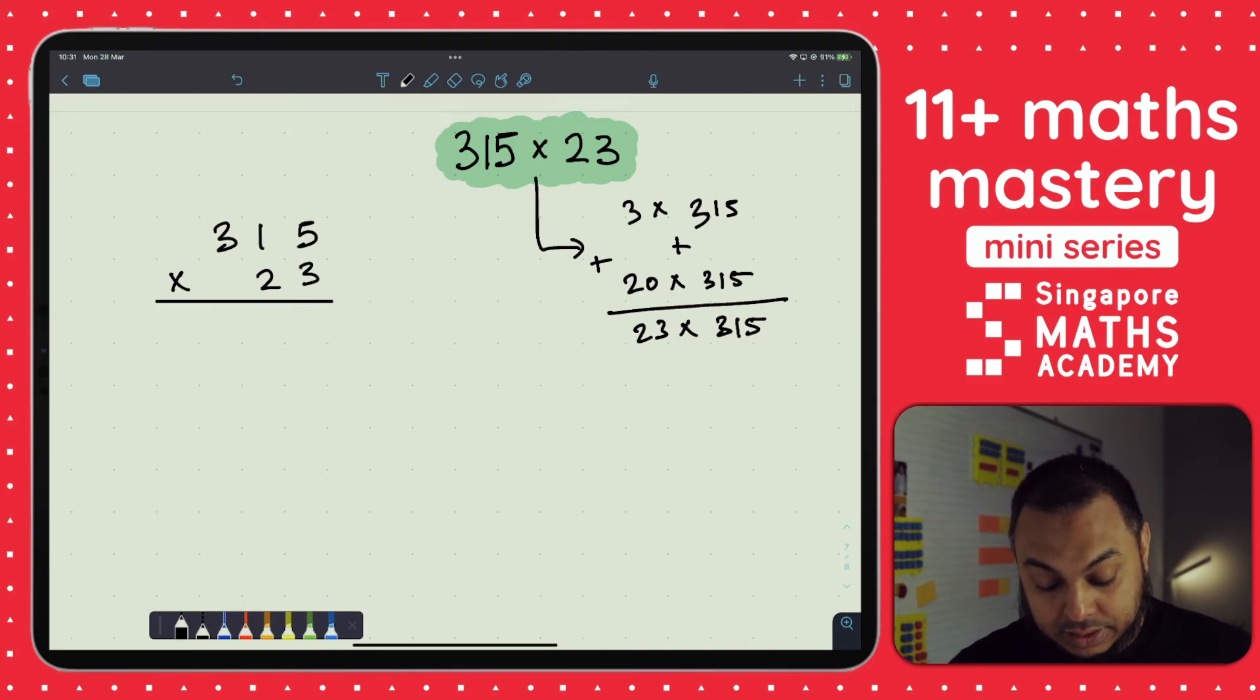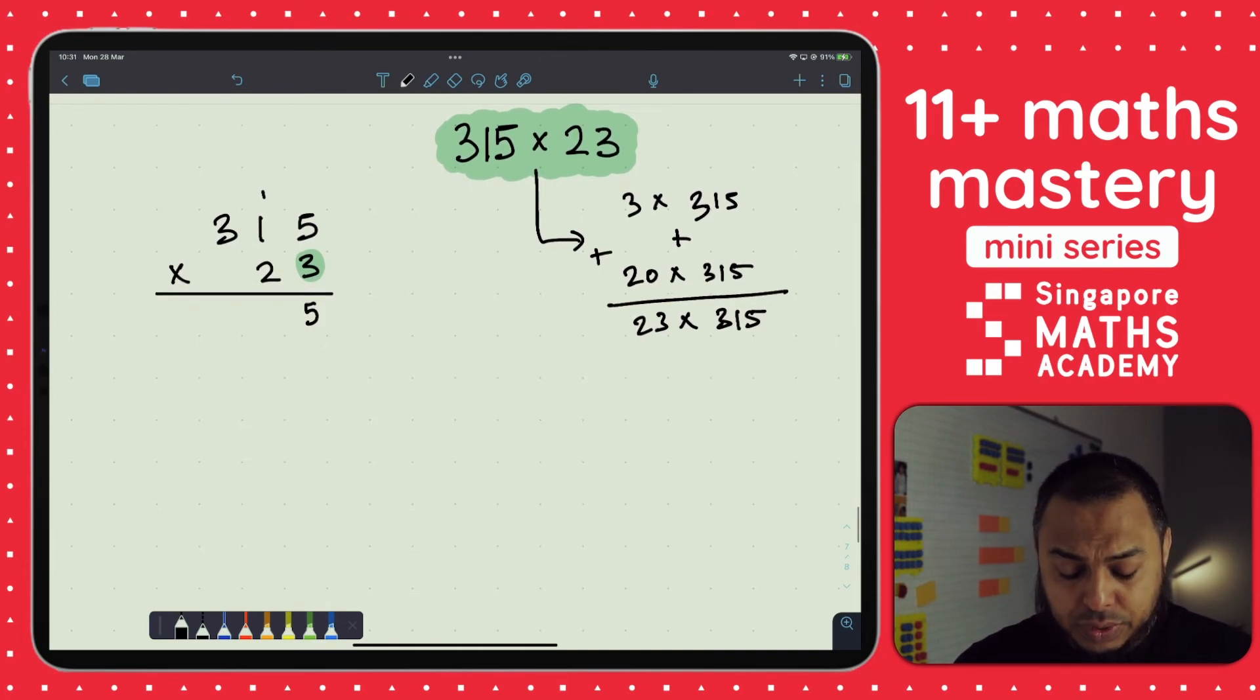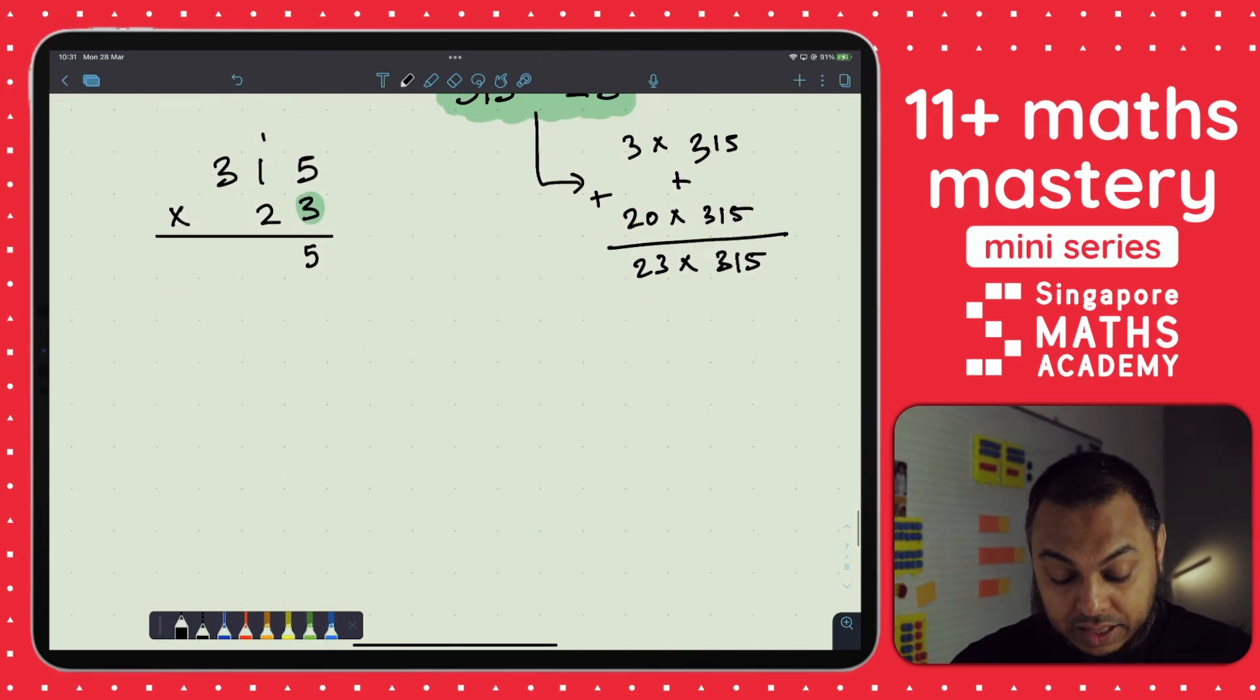So let's have a look at this. 3 times 5 is 15, but this is our ones column and 15 has 1 ten, so I'm going to write 5 ones here. I'm going to add the 1 ten on later after I figure out how many tens there are when I multiply 3 times 10. 3 times 10 is 30, add the 1 ten is 4 tens, therefore it's 40, so I'm going to put the 4 here. Our final part is 3 times 300. 3 times 3 is 9, so 3 times 300 is 900, and so that's why I put a 9 here.